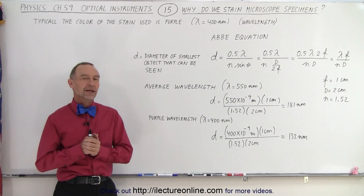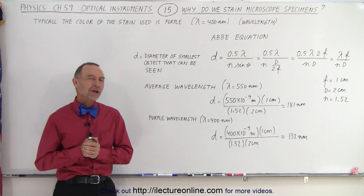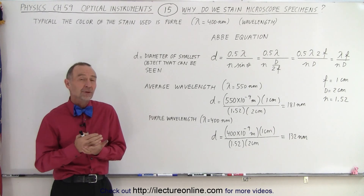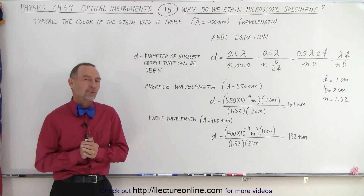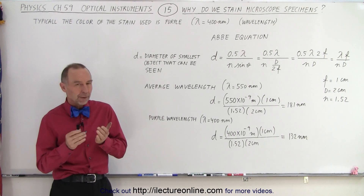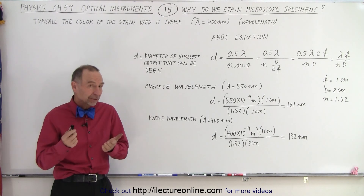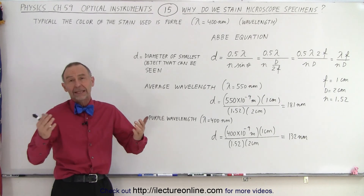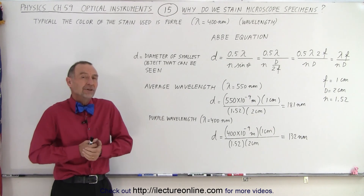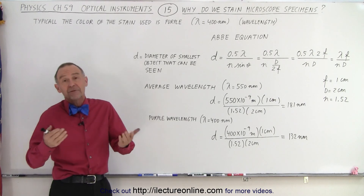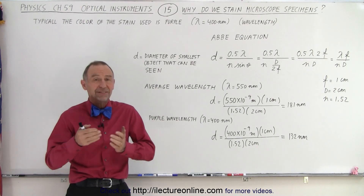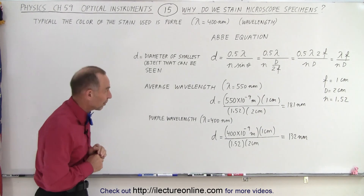Welcome to our lecture online. You may have also wondered why in some cases we stain the specimen that we look at with our microscopes, and typically the color used is purple. Purple has a wavelength of 400 nanometers, where typically light has a wavelength between 400 and 700 nanometers, so if we take an average of 550 nanometers, what is the difference between staining your specimen and not staining your specimen?